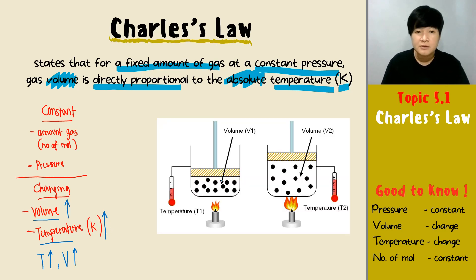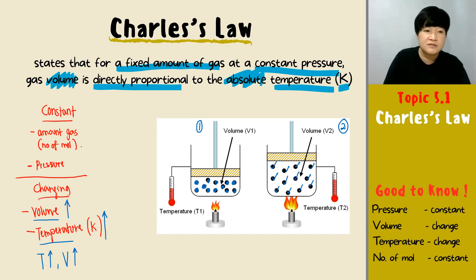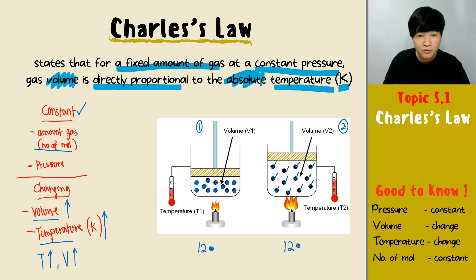Looking at the diagram, let's check the first thing — let's try to calculate the number of particles. This is my first condition and this is my second condition. The number of particles in the first condition and in the second condition must be the same, because the number of moles is constant. You can see that you have 12 particles in both conditions — that represents the number of moles remaining constant.